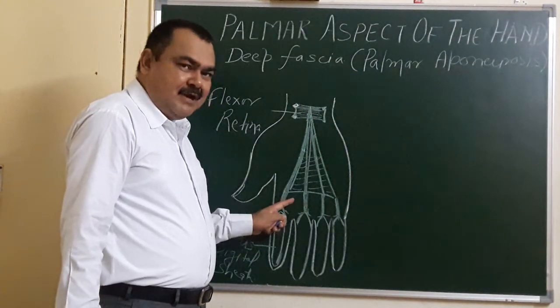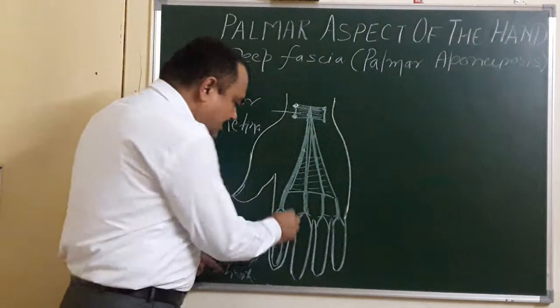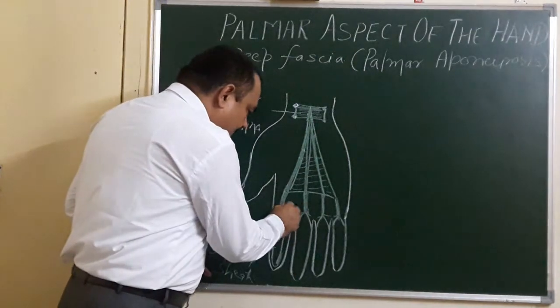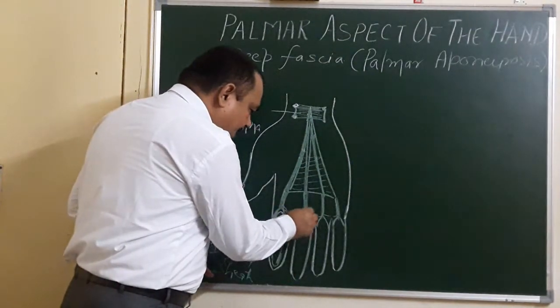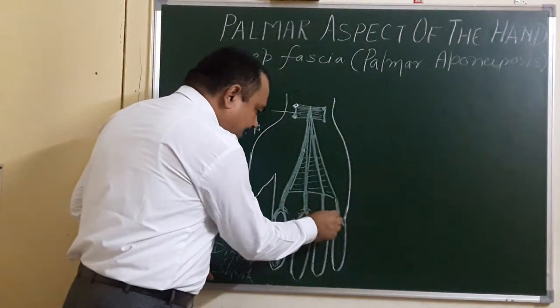The slips also merge with the deep transverse metacarpal ligament and with the capsule of the metacarpophalangeal joint.